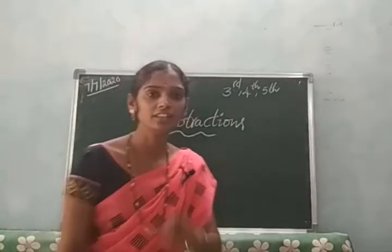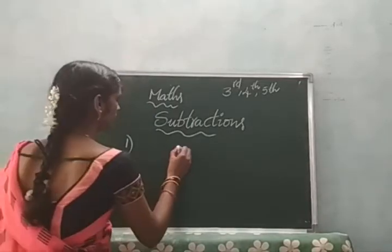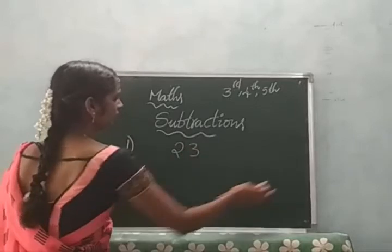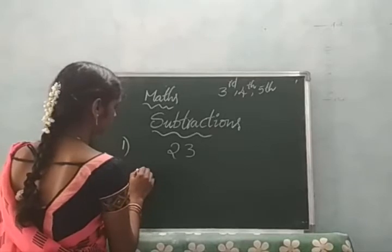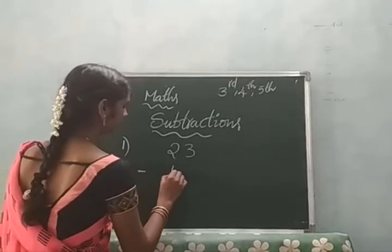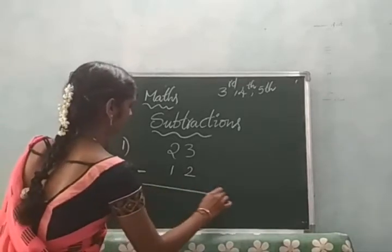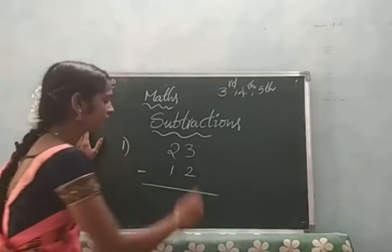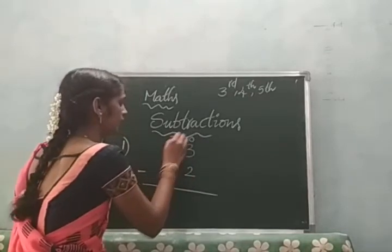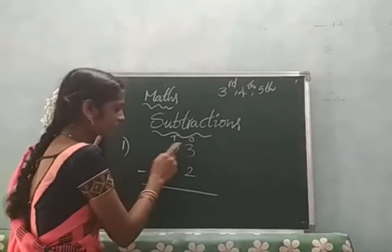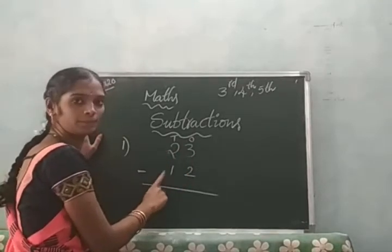Okay, children. I will give you one example. I will explain: 23 minus 12. First, let's look at the ones and tens places. 23 means 3 ones and 2 tens. Minus 12, which means 1 ten and 2 ones.